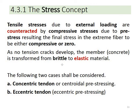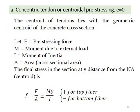Tensile stress is external and the pre-stress provides compressive resistance — this is the stress concept. Concentric prestress is applied at the centroidal axis. For eccentric prestress, the eccentricity formula involves the upper fiber (top fiber) and lower fiber (bottom fiber). The formula requires the pre-stress force P, the area A, the eccentricity distance e, and the moment of inertia I.